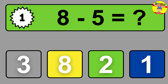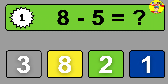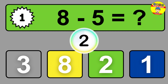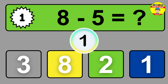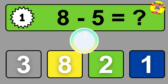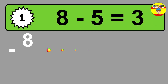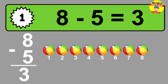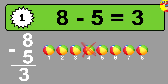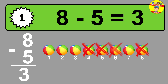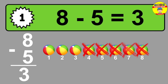Question 1. 8 minus 5 equals what? So the answer is 8 minus 5 is 3. Let's count it: 1, 2, 3.